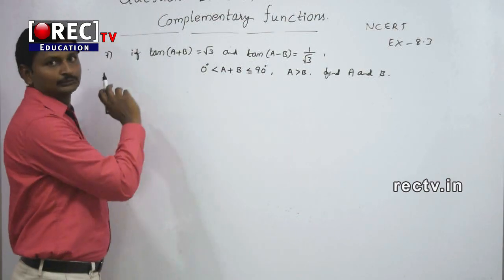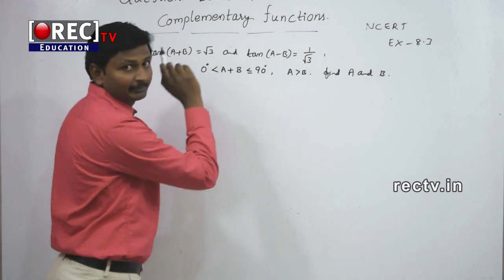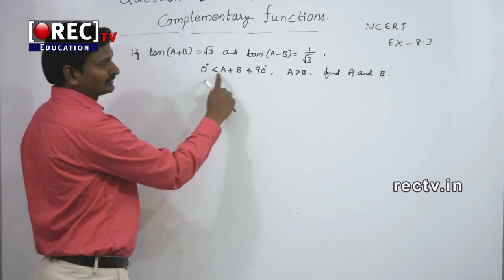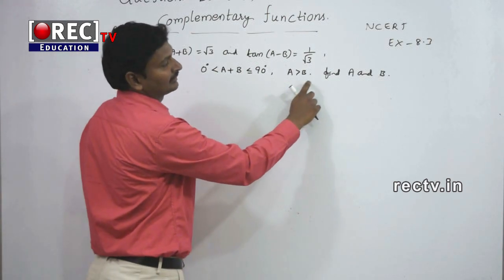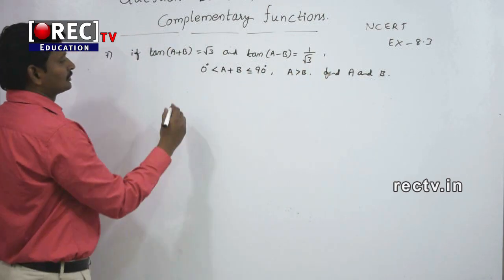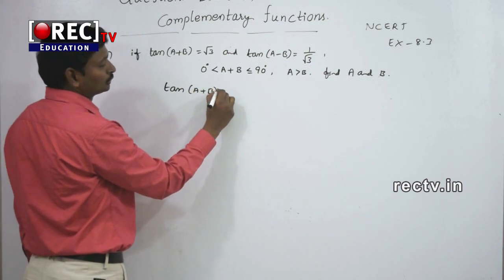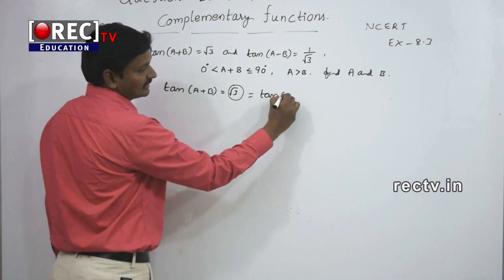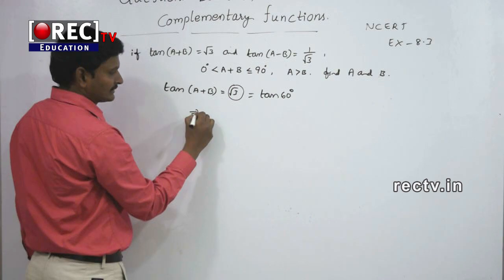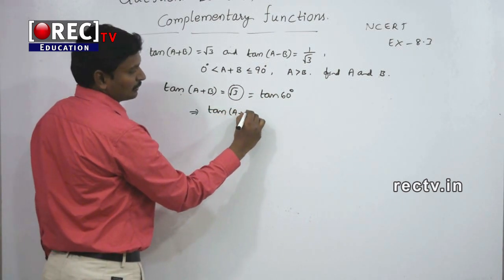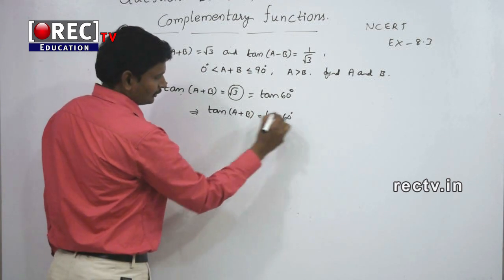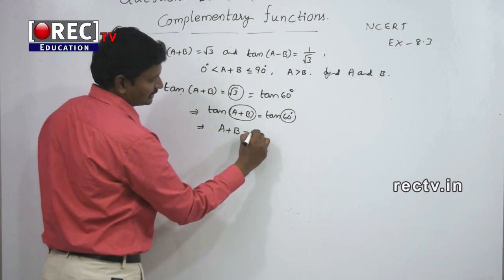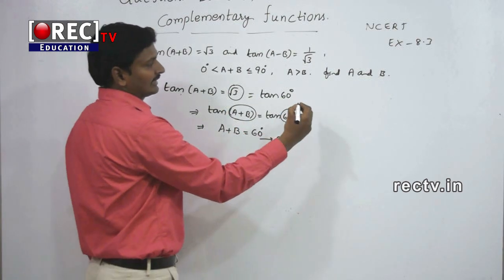Eighth question: if tan(A+B) = √3 and tan(A-B) = 1/√3, where both angles lie between 0° and 90° and A > B, find the values of A and B. From the table, tan(A+B) = √3 = tan60°, so A + B = 60° — equation 1. And tan(A-B) = 1/√3 = tan30°, so A - B = 30° — equation 2.